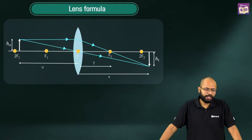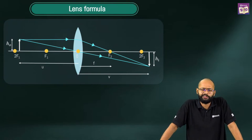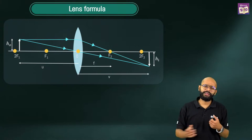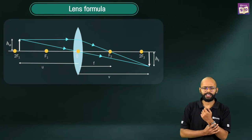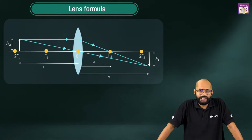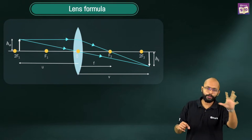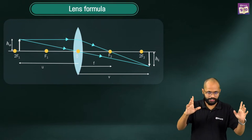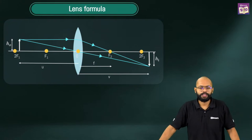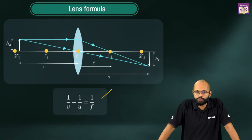What was mirror formula — does anyone remember? One upon v plus one upon u equals one upon f. V was image distance, u was object distance, f was the focal length. The lens formula is: 1/v minus 1/u equals 1/f. Okay — has anyone tried the derivation of mirror formula before? I asked this before.